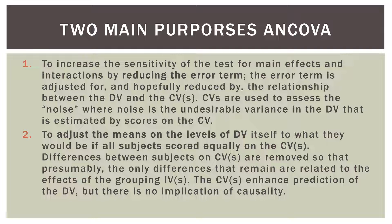The error term is adjusted for — and hopefully reduced by — the relationship between the dependent variable and the covariate. Covariates are used to assess the 'noise,' where noise is the undesirable variance in the dependent variable estimated by scores on the covariate. Some variance in study skills can be accounted for by GPA scores, because students with better study skills may have better GPAs to begin with. The second purpose is to adjust the means on the levels of the dependent variable — the study skills scores for year one, two, and three — to what they would be if all subjects scored equally on the covariates, removing differences between subjects on the covariate so the only remaining difference is related to the effects of the independent variable grouping.